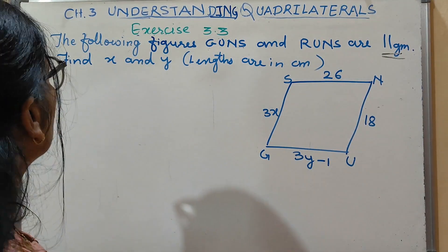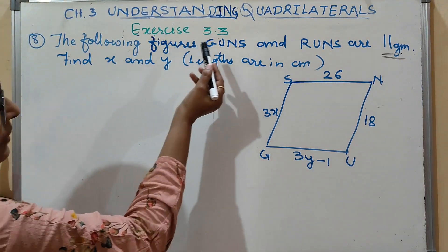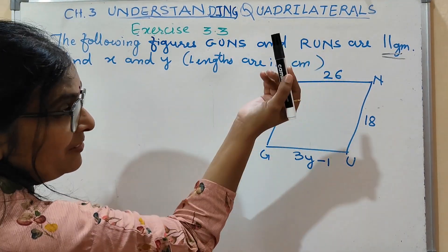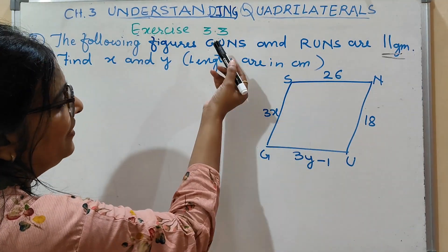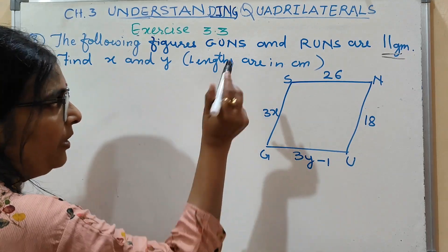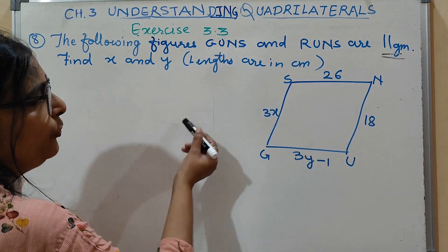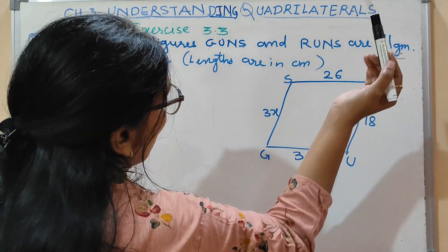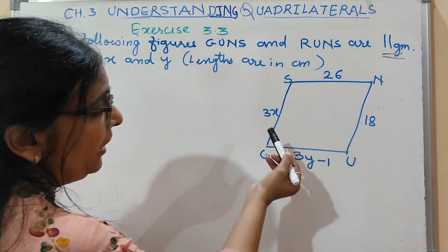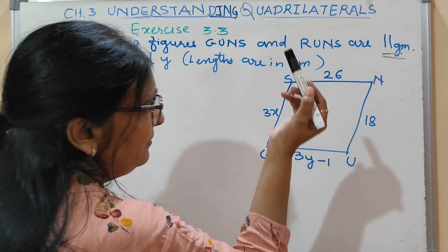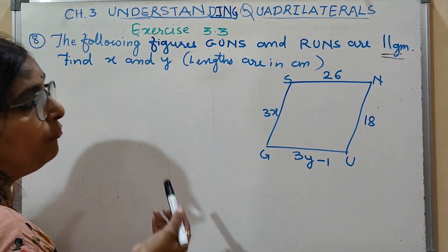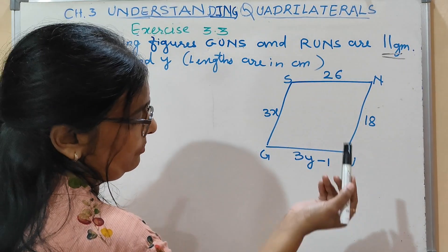What is given here in this question? The following figure GUNS — you can say GUNS and RUNS. So GUNS is a parallelogram. Find the value of X and Y, and the lengths are in centimeters.